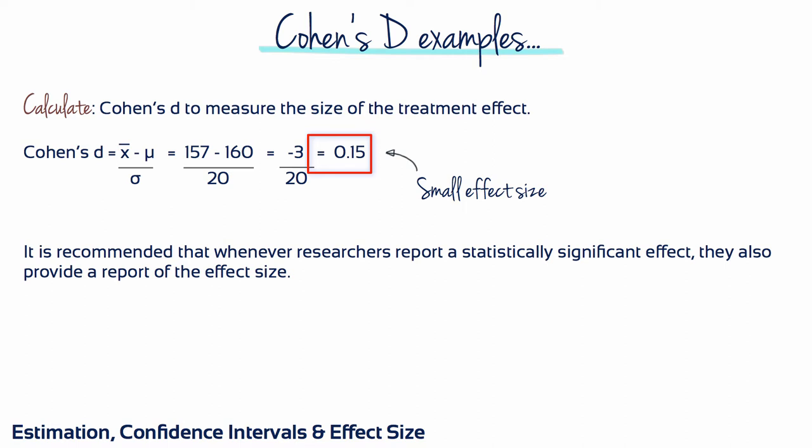Cohen's D equals 157 minus 160 divided by 20, which equals 0.15. Using Cohen's rules of thumb, this would be interpreted as a small effect size. And that makes sense. There's no real-life medical application for giving a population of hypertensive patients a drug that only lowers their blood pressure by three points. Going from 160 millimeters of mercury to 157 isn't going to help them. They're still going to be hypertensive.